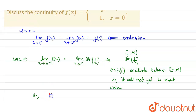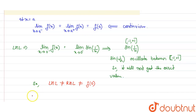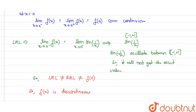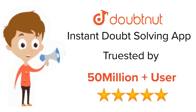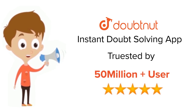So LHL will not be equal to RHL, and that won't be equal to f(0), that is 1. So my function f(x) is discontinuous. Thank you. For Class 6 to 12, IIT JEE and NEET level, trusted by more than 5 crore students. Download DoubtNet app today.